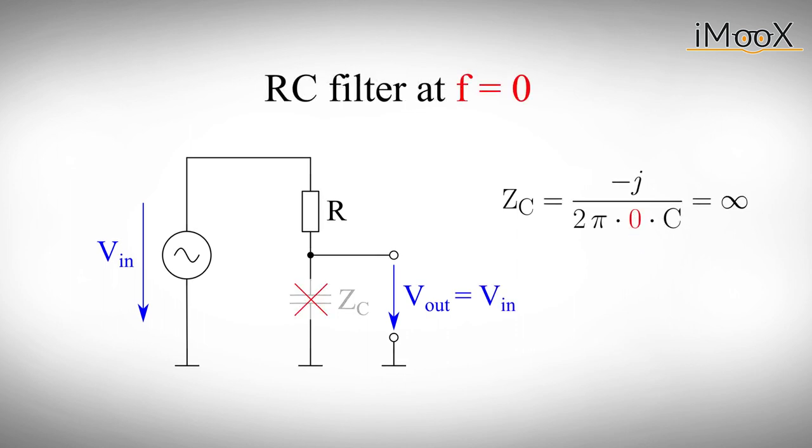Let's take a look at what our RC filter does at the two frequency extremes. If the signal frequency is zero, or in other words, if the input voltage is a DC voltage, the impedance of the capacitor will, theoretically, approach infinity. We can therefore exchange the capacitor with an open loop. Since no current can flow to ground, the output voltage will be the input voltage.